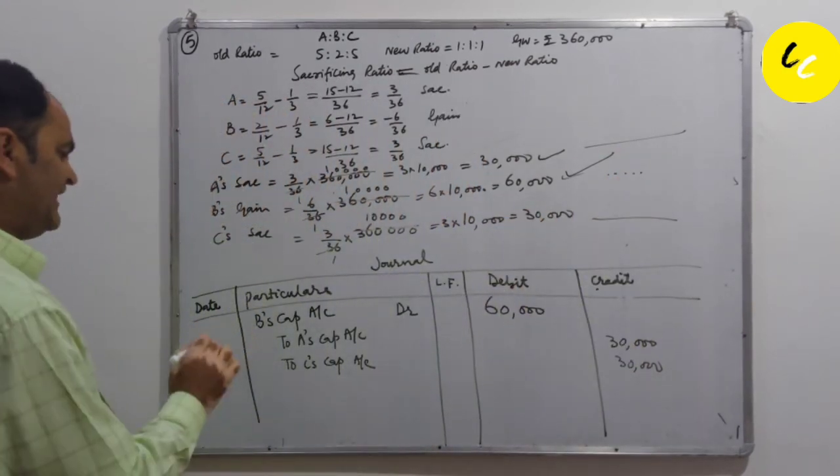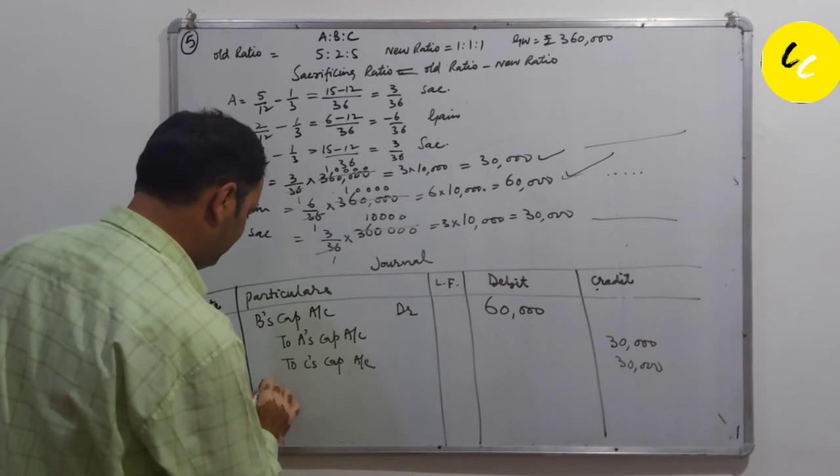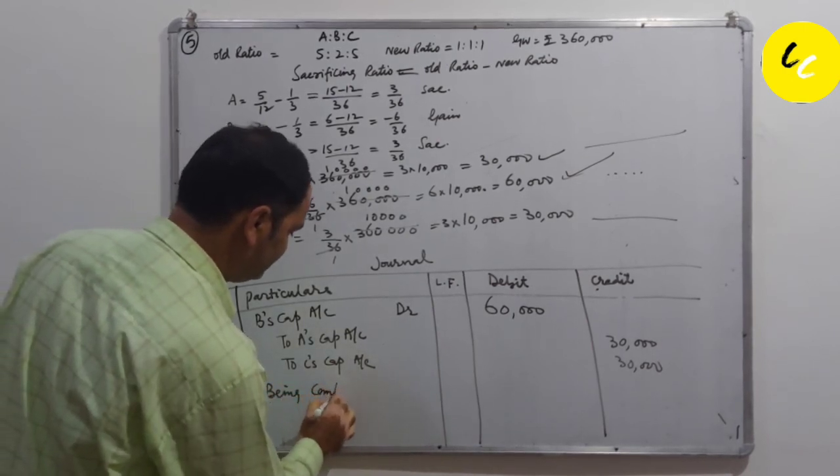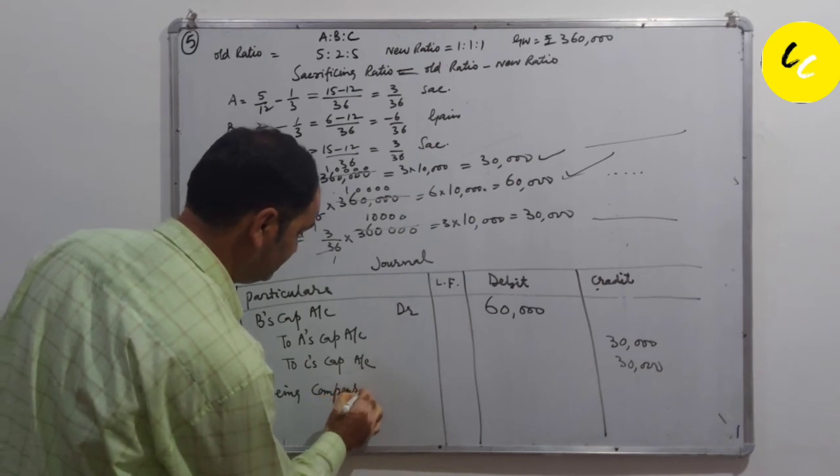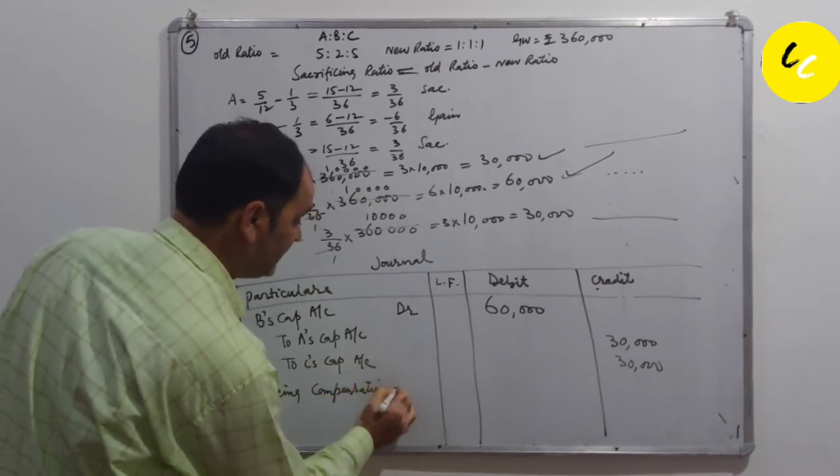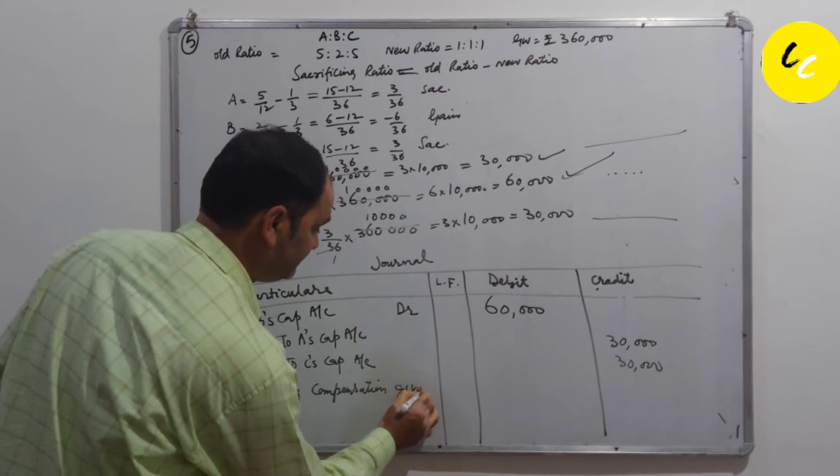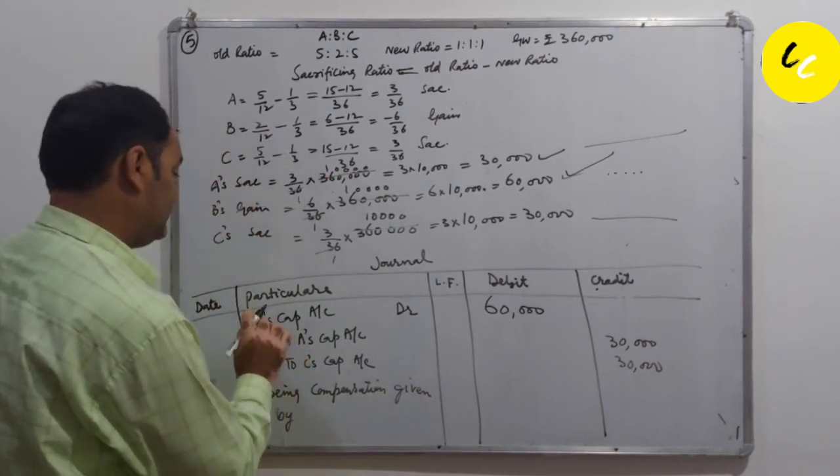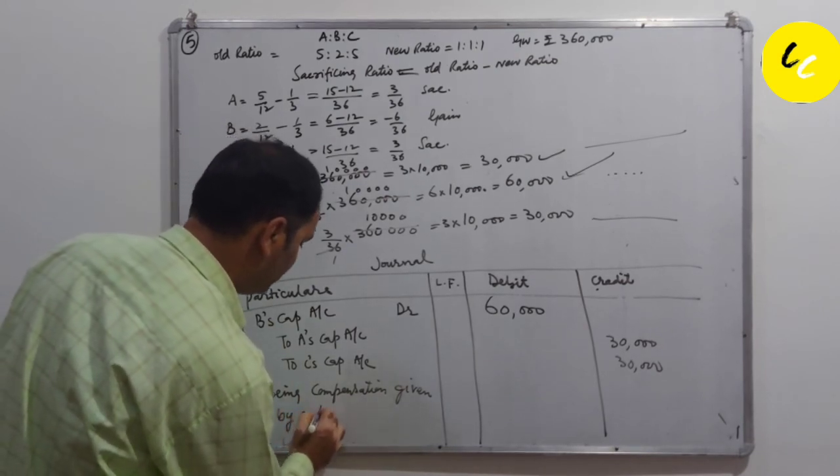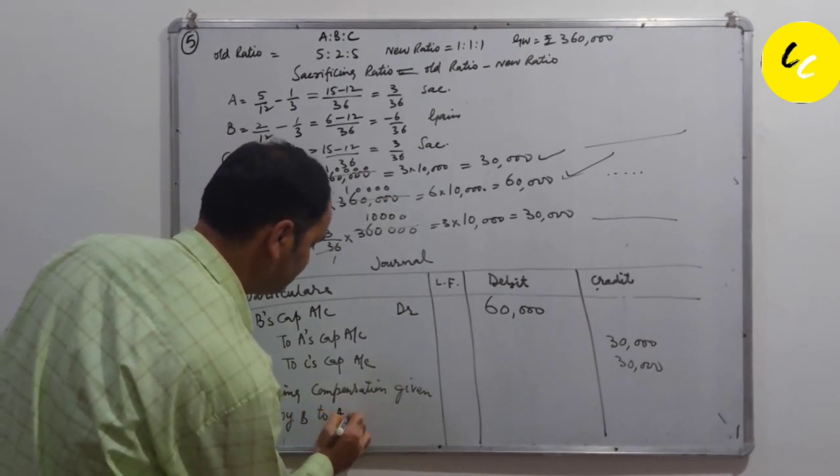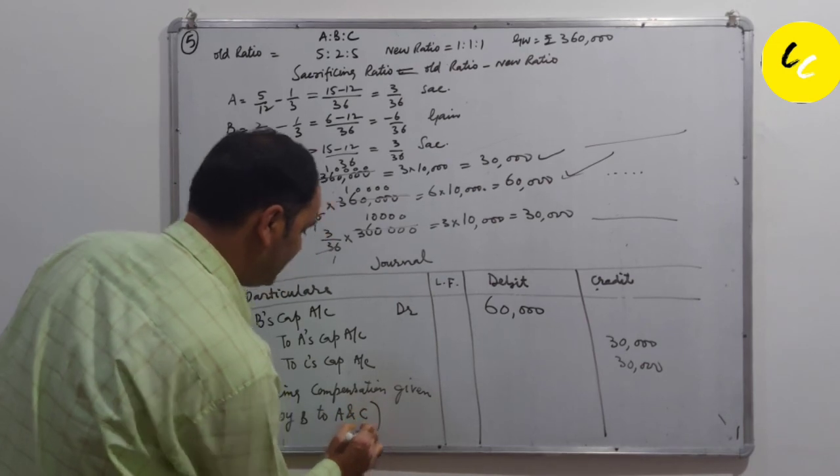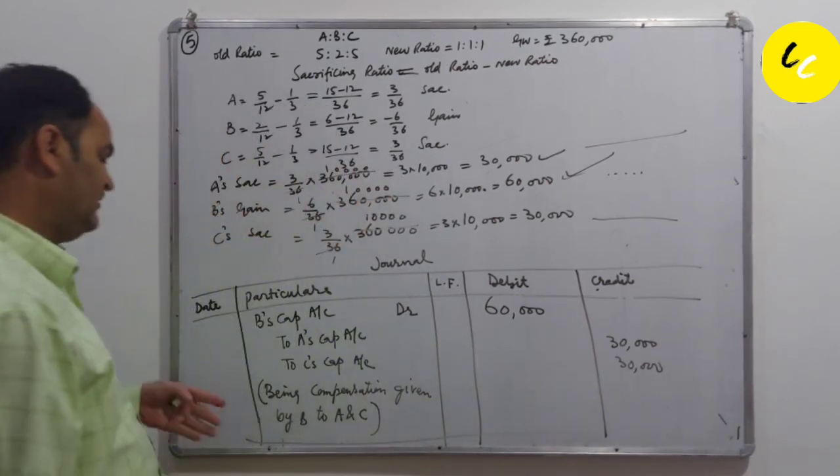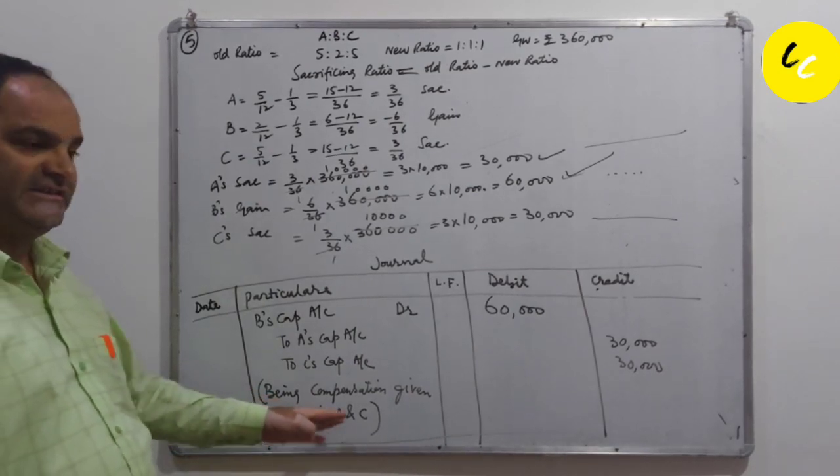We will write the narration: being compensation given by B to A and C. Partner B is giving compensation to the sacrificing partners, that is A and C.